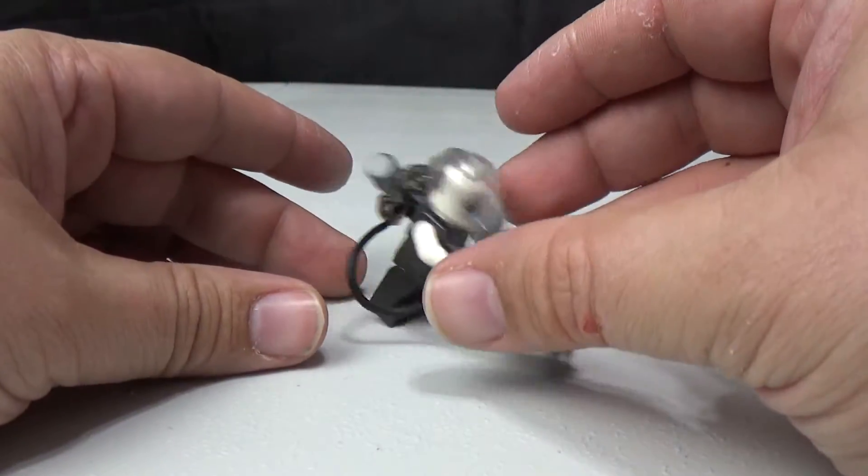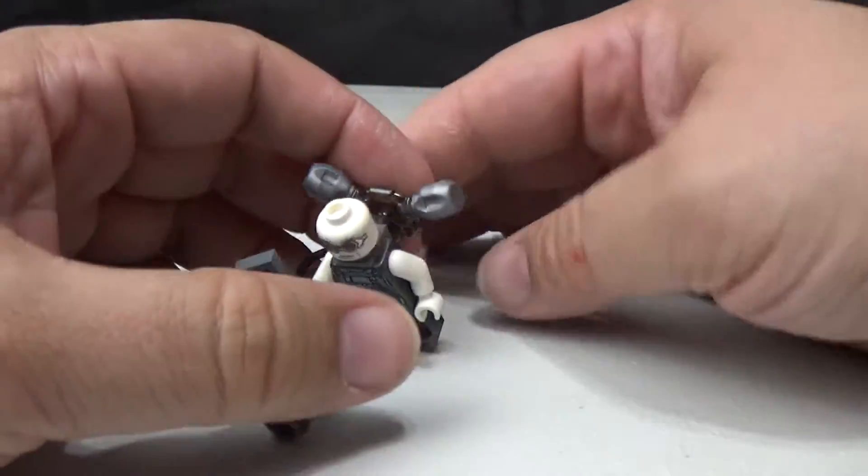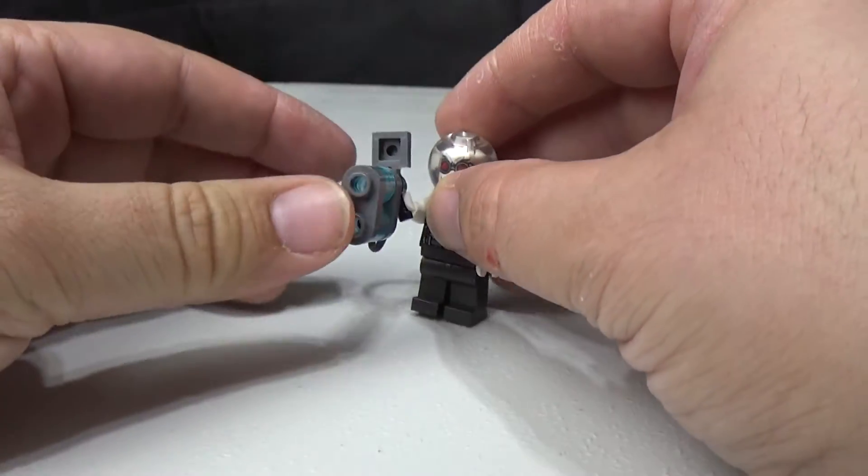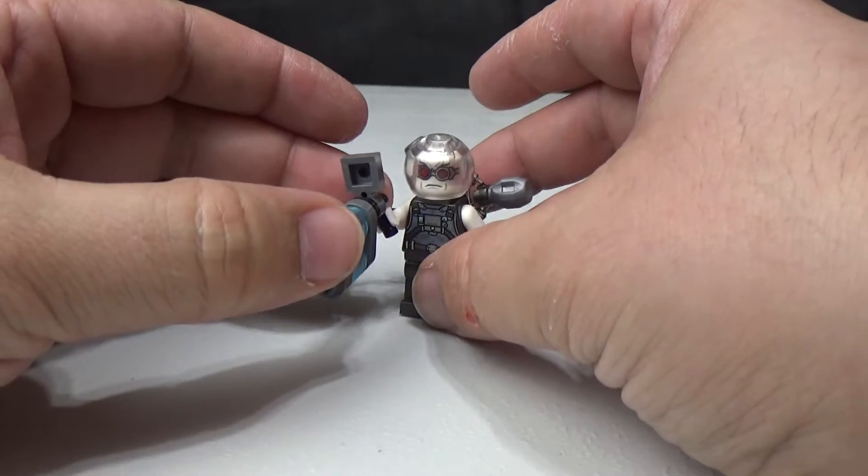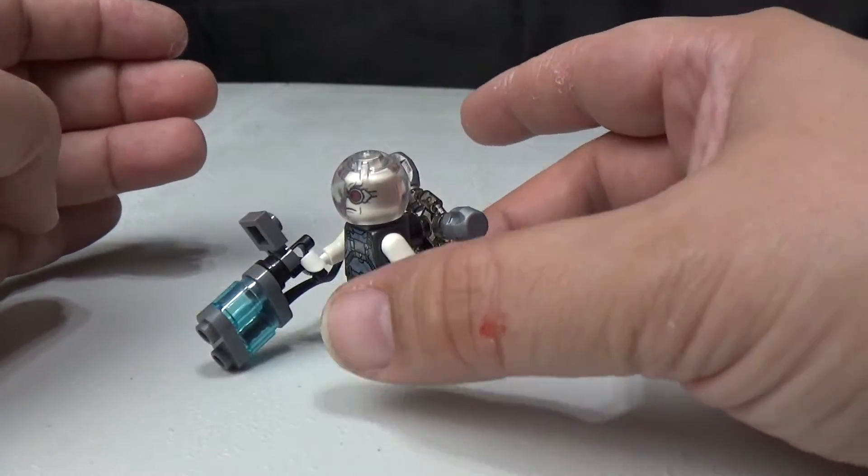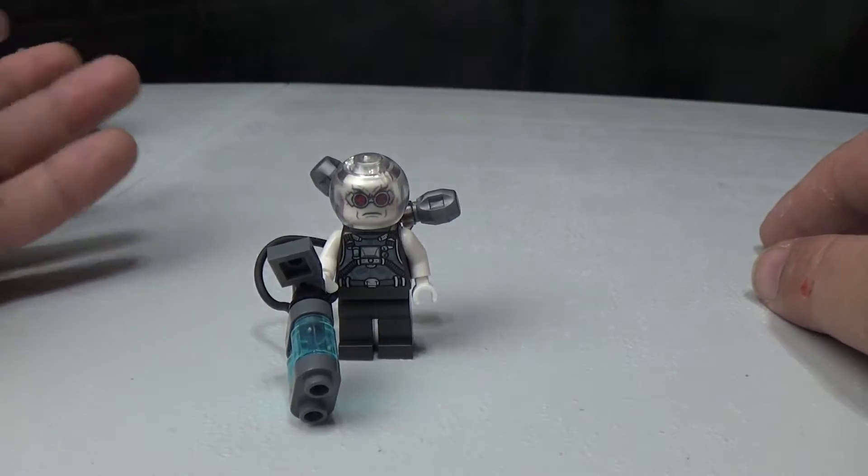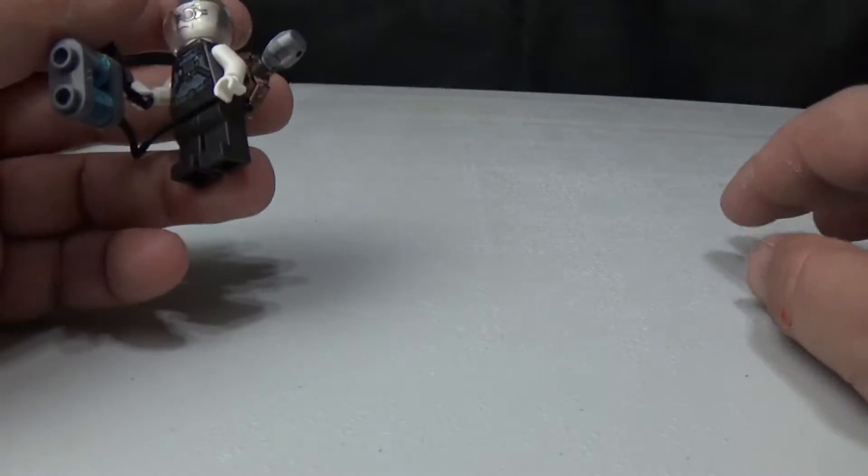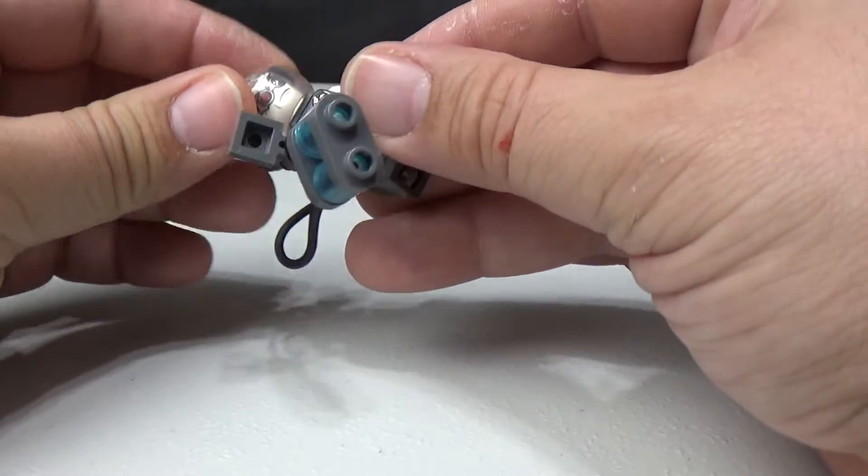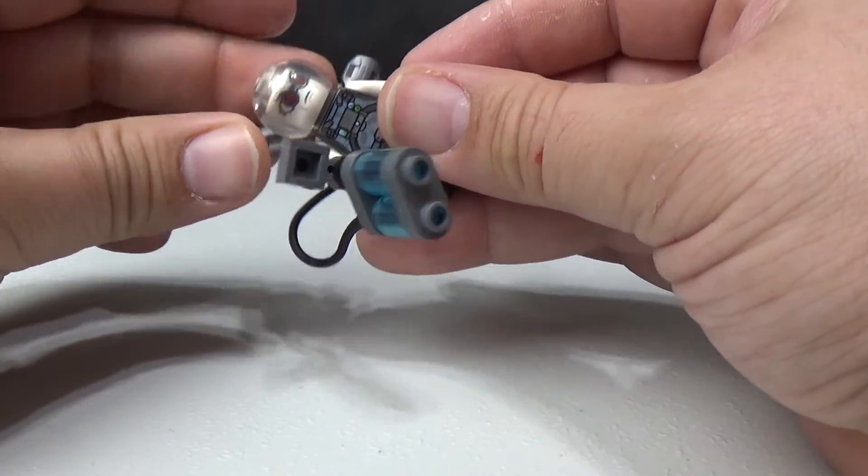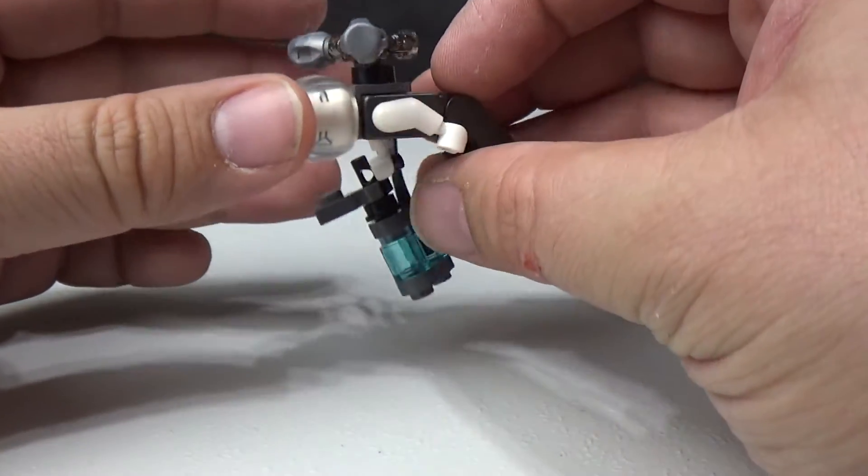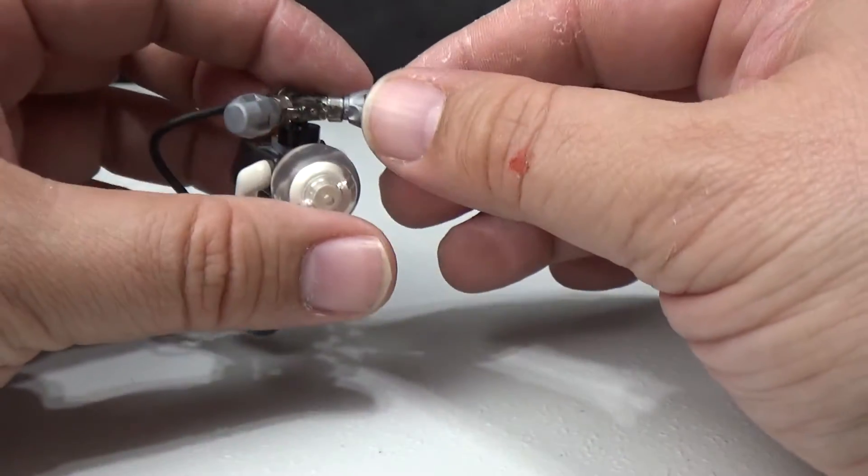I'm not sure how well he stands. He doesn't stand very well with all this stuff on. His gun is just really heavy, so unless you have him pegged into a vehicle or have the gun facing down, he is not going to stand. He has the standard LEGO articulation - legs, arms, head moves, but you have to take the fishbowl off.